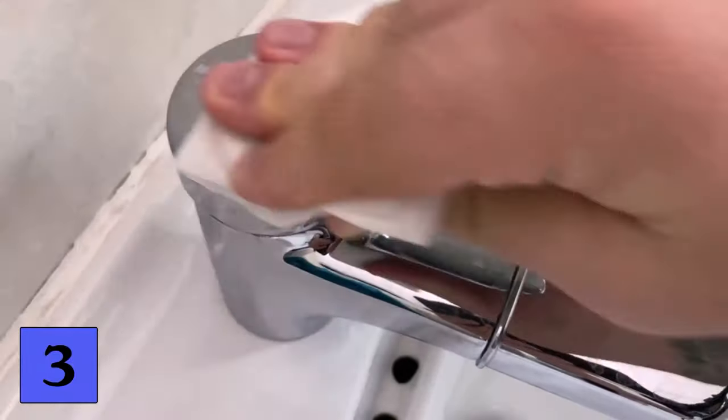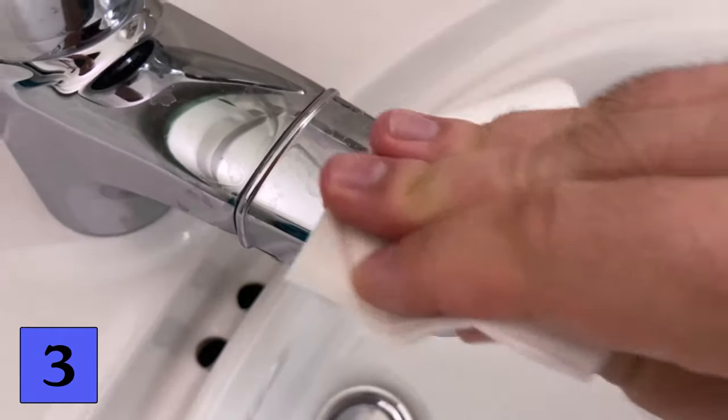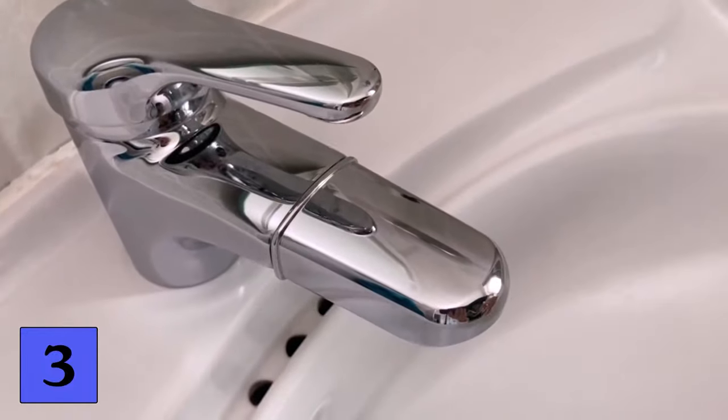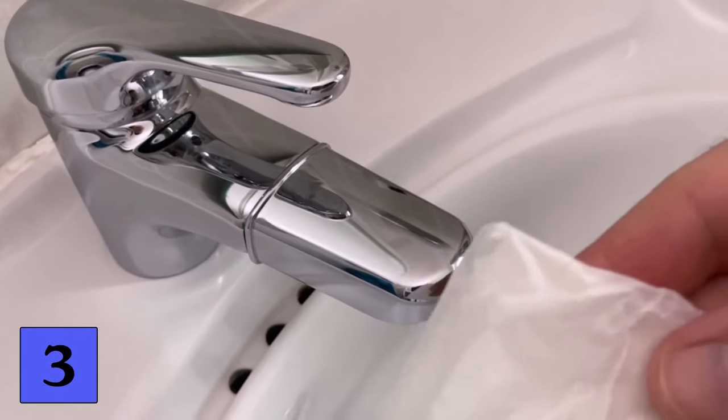The second advantage is that we can actually seal our surface with it and then ensure that water stains and limescale spots can no longer form so quickly. This means that you can use the baking paper to clean your tap directly and coat it so that it no longer gets new water stains so quickly. Be sure to try this trick yourself.